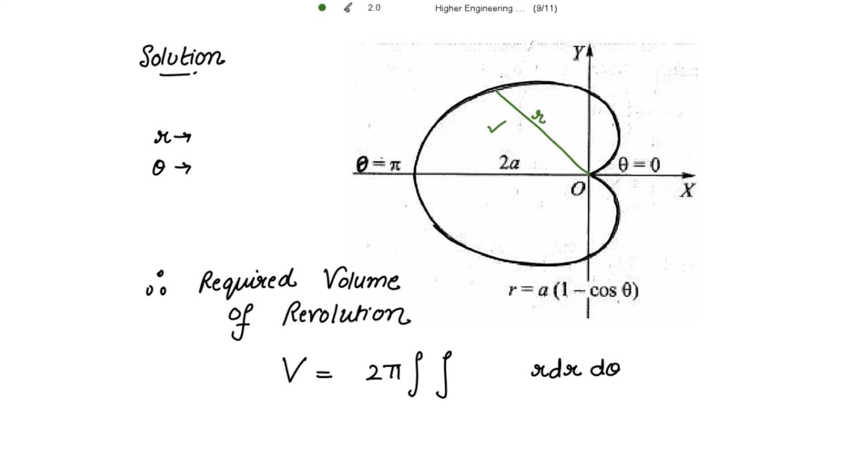For which r varies from 0 to r equal to a into 1 minus cos theta. And because it is the region above the x-axis, theta varies from 0 to pi. So what are the limits for r? It is from 0 to a into 1 minus cos theta and the limits for theta is from 0 to pi.